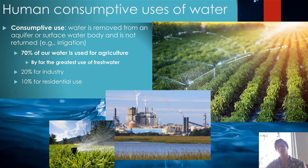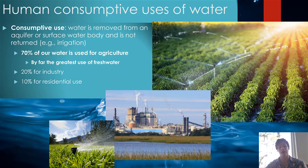When we think about consumptive uses of water, consumptive use is water that is removed from an aquifer or a surface water body and is not returned. These are where we actually consume the water — used for irrigation, drinking water, and a variety of uses where we do not put the water back. 70% of our water is used for agriculture, and irrigation is by far the greatest consumptive use of water.